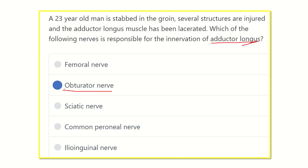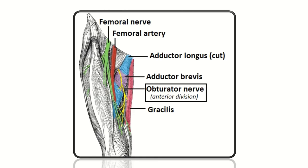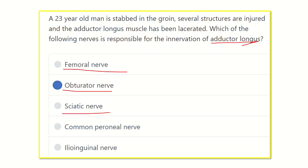The femoral nerve is not the answer because the femoral nerve lies in the femoral triangle area and supplies muscles which are not the adductor group. The femoral nerve supplies the sartorius muscle and the vastus group — vastus medialis, vastus lateralis, and vastus intermedius — so the femoral nerve is not the answer.